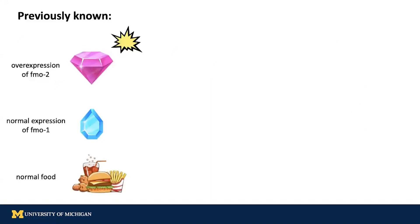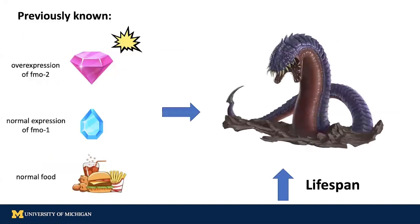This is what we already know. When the blue gem and the food are normal, but we have the super pink gem, we have a long-lived worm monster.